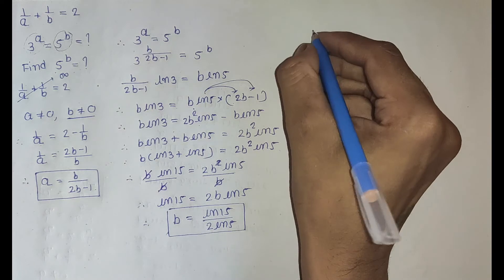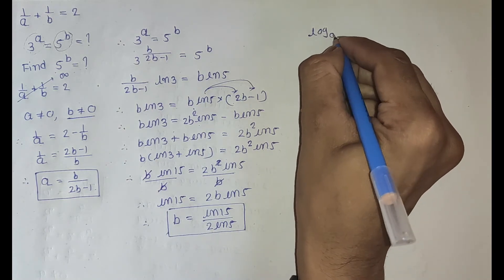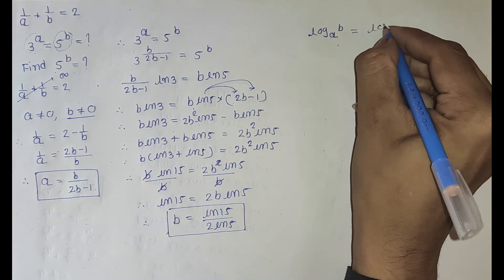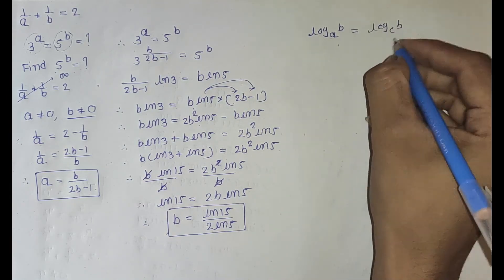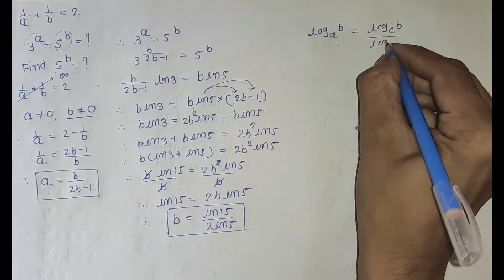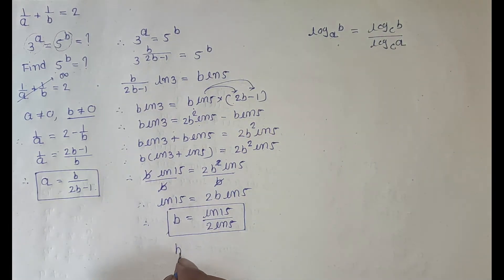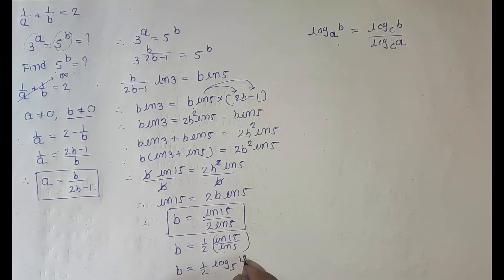We know log A base n B index equal to log C base B divide log C base A. That's why I can write b equal to 1 half ln 15 divide ln 5. Now b equal to 1 half log 5 base and 15 index.